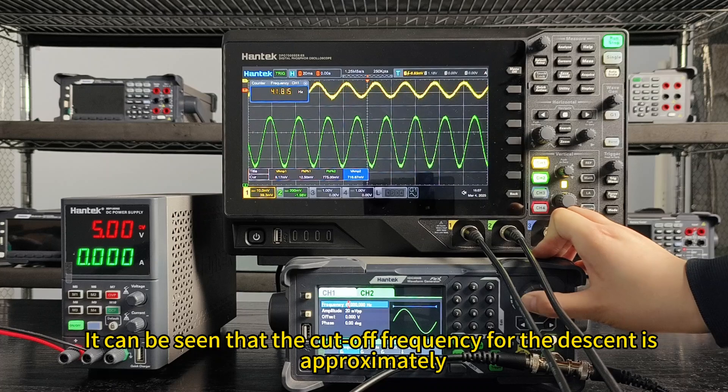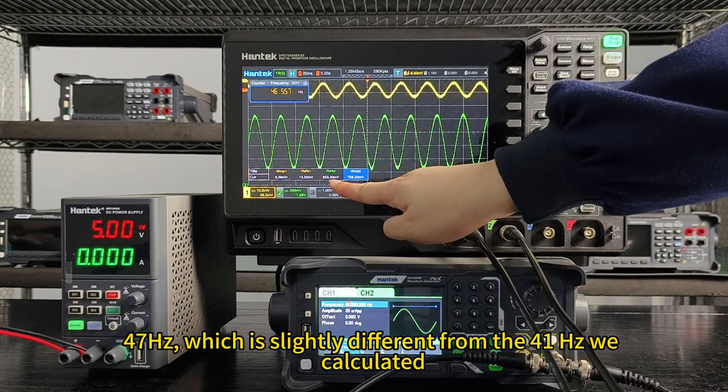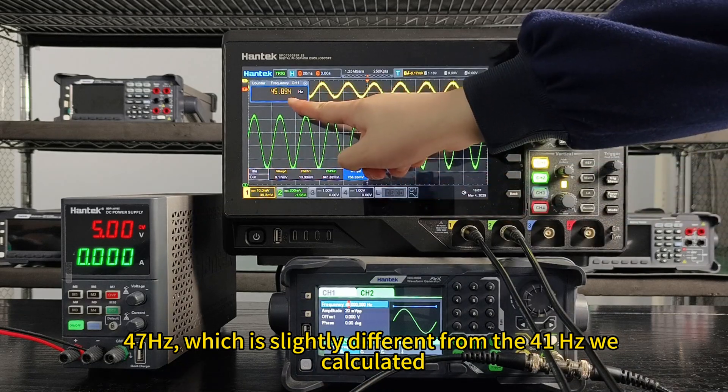It can be seen that the cut-off frequency for the descent is approximately 47 hertz, which is slightly different from the 41 hertz we calculated.